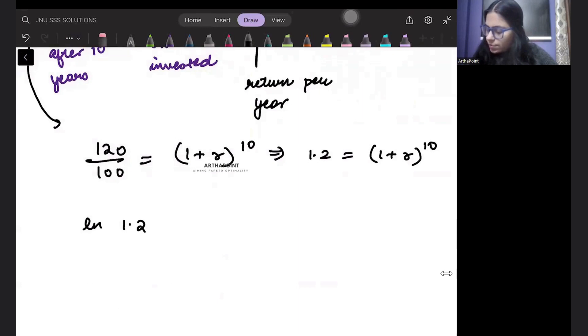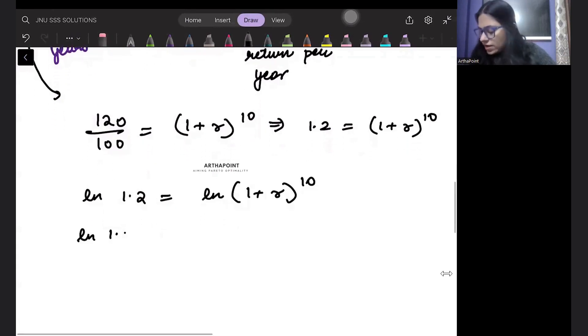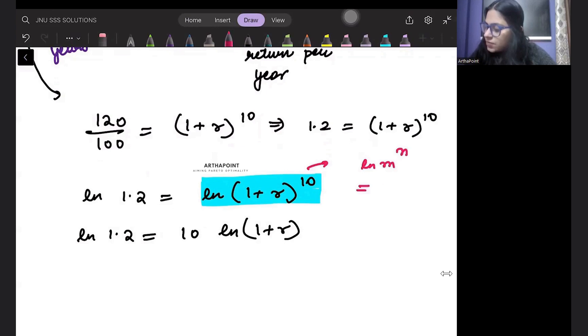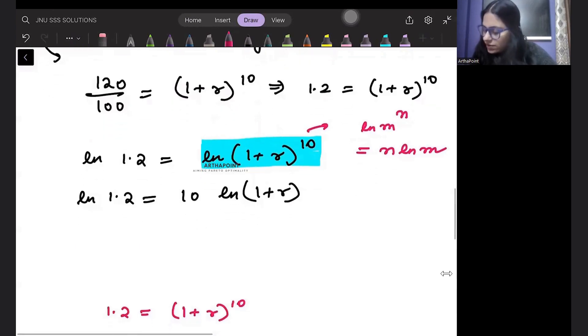You will get ln 1.2, not log, I am taking natural log, is equal to ln 1 plus R to the power 10. So you will have ln 1.2 is equal to 10 ln 1 plus R. Here I have used this rule: log m to the power n is n log m. I will get ln 1.2 divided by 10 is equal to ln 1 plus R.